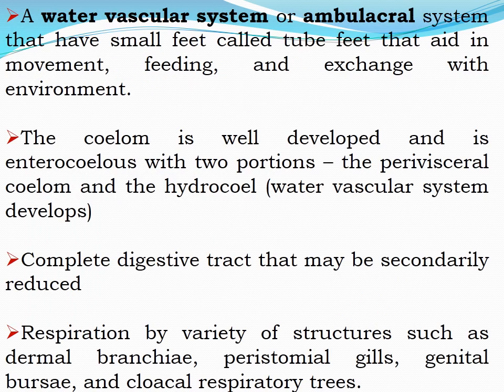A water vascular system, also called the ambulacral system, is a characteristic feature of echinoderms. It has small feet called tube feet that aid in movement, feeding, and exchange with the environment. The coelom is well-developed and enterocoelous with two portions: the perivisceral coelom and the hydrocele, which forms the water vascular system.